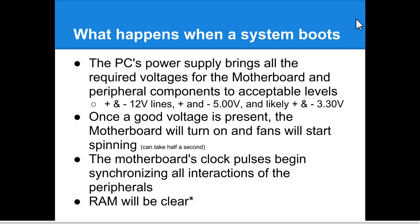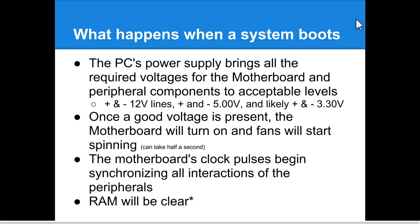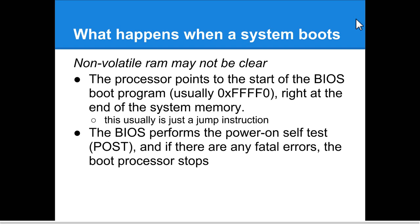Let's start from the very basics of what happens when you press the power button. The PC's power supply brings all required voltages for the motherboard up to the required levels. Once good voltage is present, the motherboard starts turning on all fans and they start spinning. The clock cycle starts and everything synchronizes. RAM should be clear at this point. Non-volatile RAM may not be clear — that's important to remember, especially in malware analysis environments. The processor then points to the start of the BIOS program. The BIOS performs power-on self-test (POST) and checks for fatal errors. If there are any, the processor just stops.